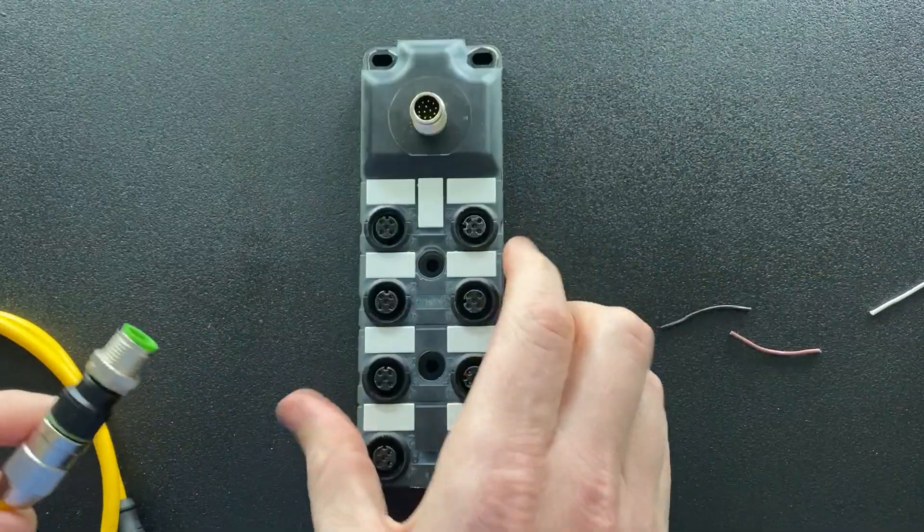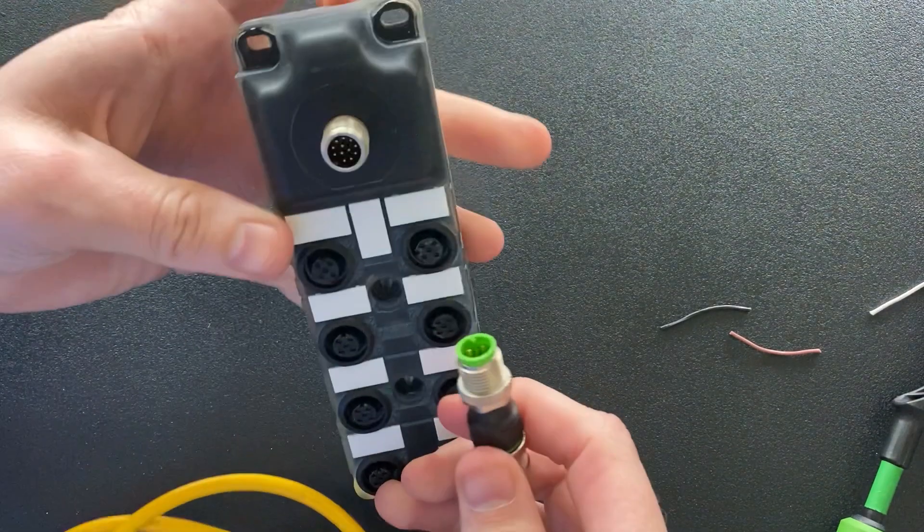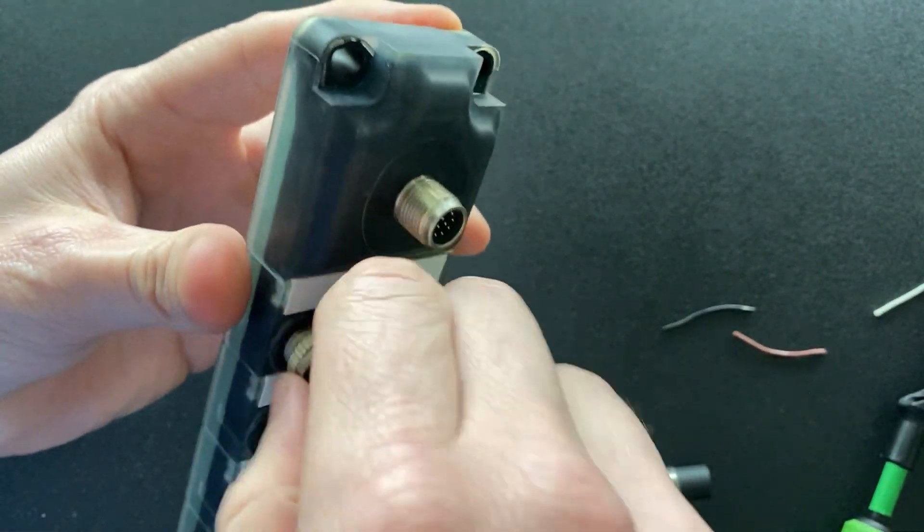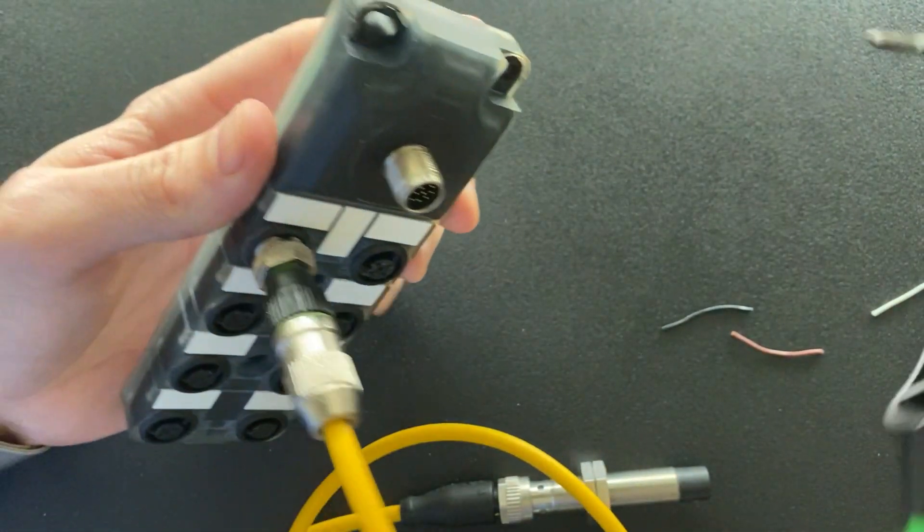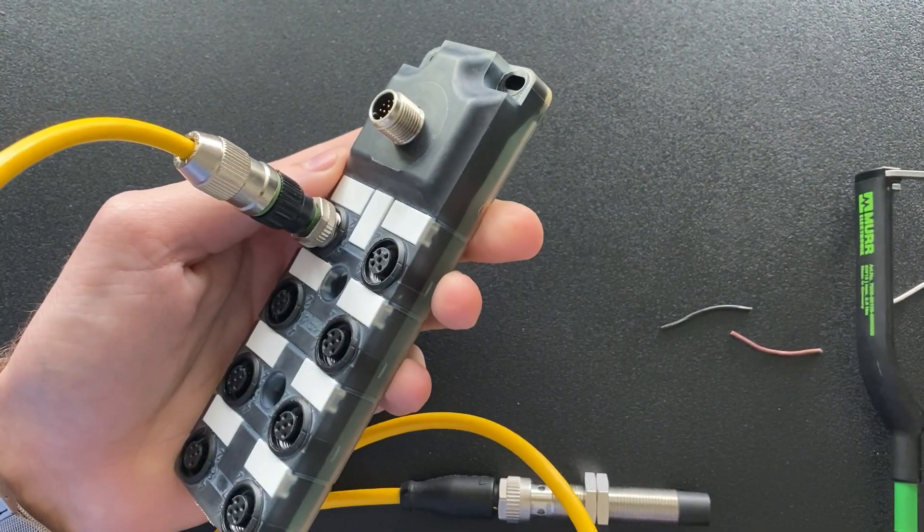And then from there, you can take it right into your distribution block. Here's a little passive block I have here. Thread it through, and that's it—easy done.